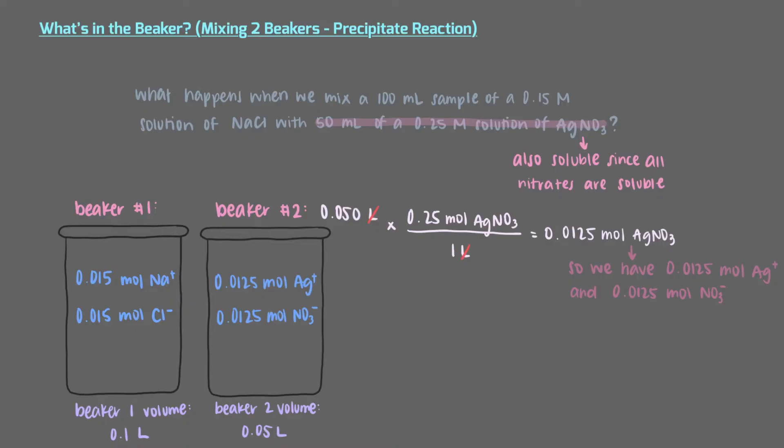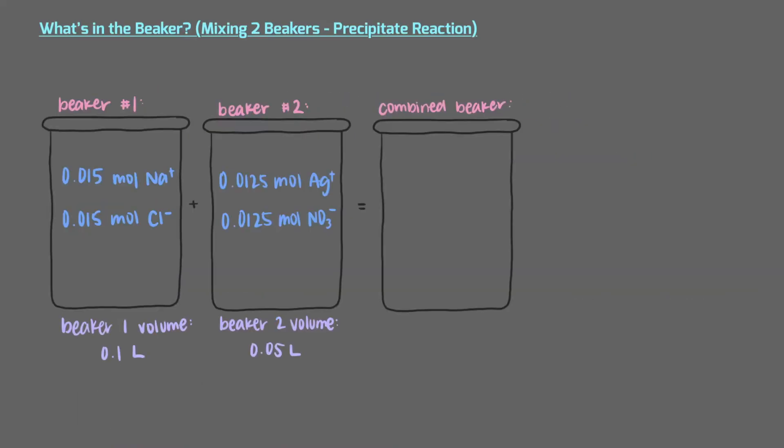But what happens when we mix the contents of the beakers together? Well, when we combine a solution with a volume of 100 milliliters and another solution with a volume of 50 milliliters, the total volume of our new solution is 150 milliliters. The number of moles of each ion, however, doesn't change. We still have the same amount of each ion. The only thing we changed was that we put them in a new beaker with a larger total volume.